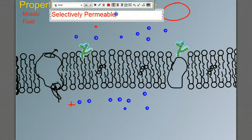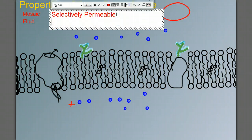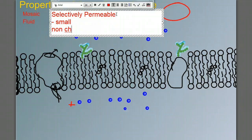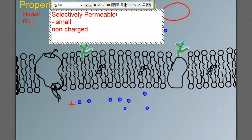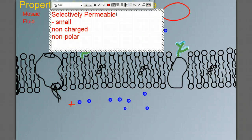So if we were going to make a list of things that could get through the bilipid layer, we'd say that those things would be small, non-charged, and non-polar, with the exception of water.